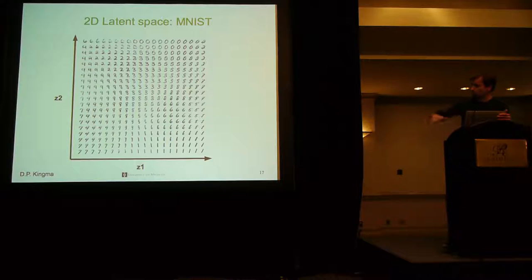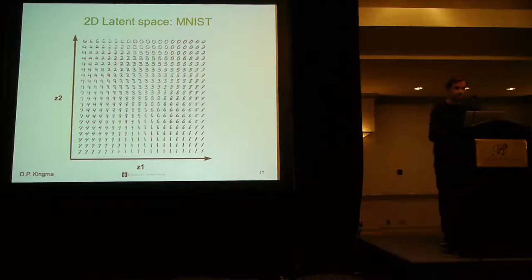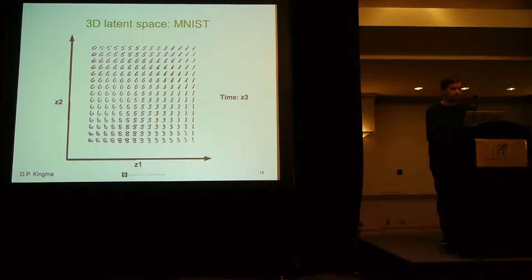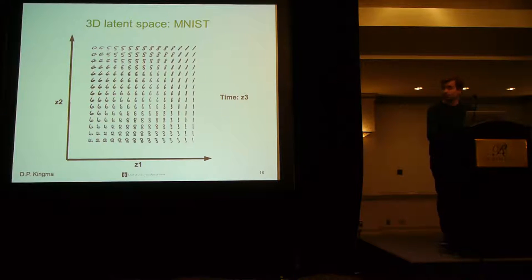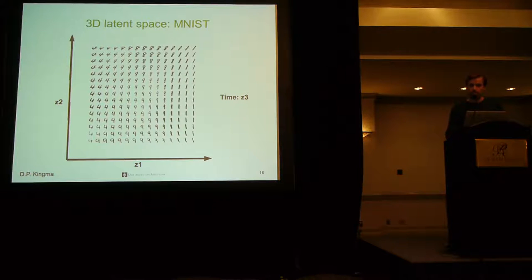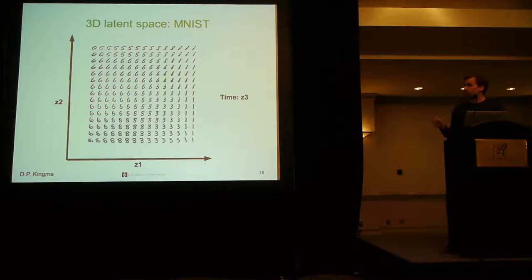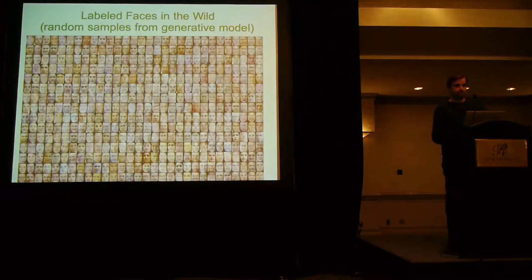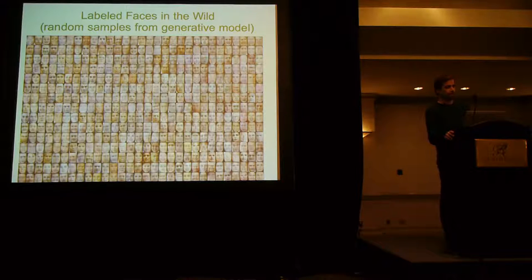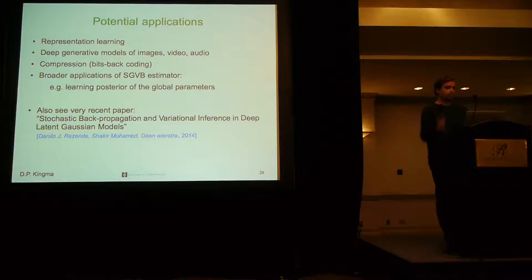You can also create this nice visualization of the latent space. This is visualization for Frey Face. You can see similar for MNIST. So there is a really smooth mapping from X to Z, but also again from Z to X. This is visualization for 2D latent space. You see that it's a really smooth mapping. We also did some experiments where we used this mapping for classification, which works quite well because you see that this space is already quite semantic.